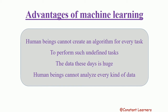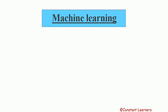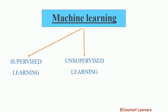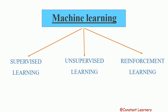There are many types of machine learning, but here we are discussing three of them. First is supervised learning, second is unsupervised learning, and third is reinforcement learning.